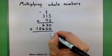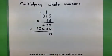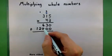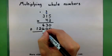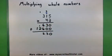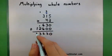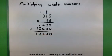So, 0 plus 0, 0. 3 plus 0 is 3. I have 6 plus 6 is 12. Carry the 1. 1 plus 2 is 3. And, 1 plus nothing is just 1. So, my final answer is 13,230.